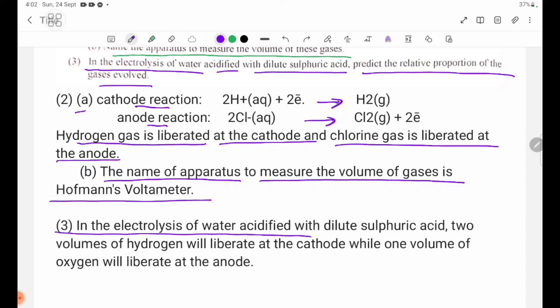Two volumes of hydrogen will liberate at the cathode, while one volume of oxygen will liberate at the anode. Cathode: 2 volumes of hydrogen. Anode: 1 volume of oxygen.